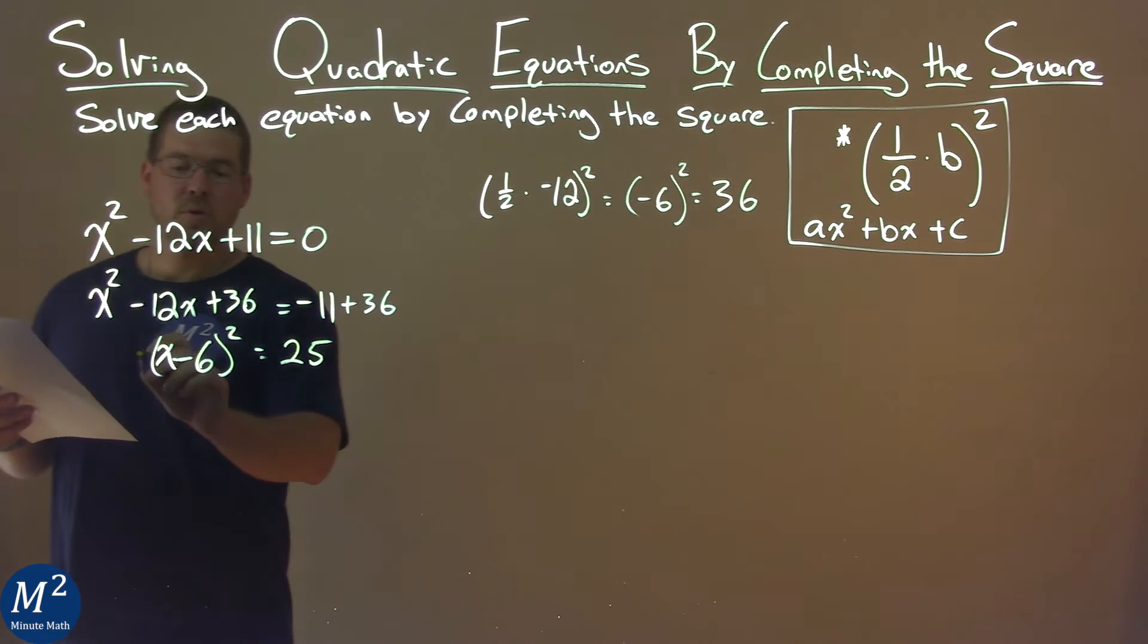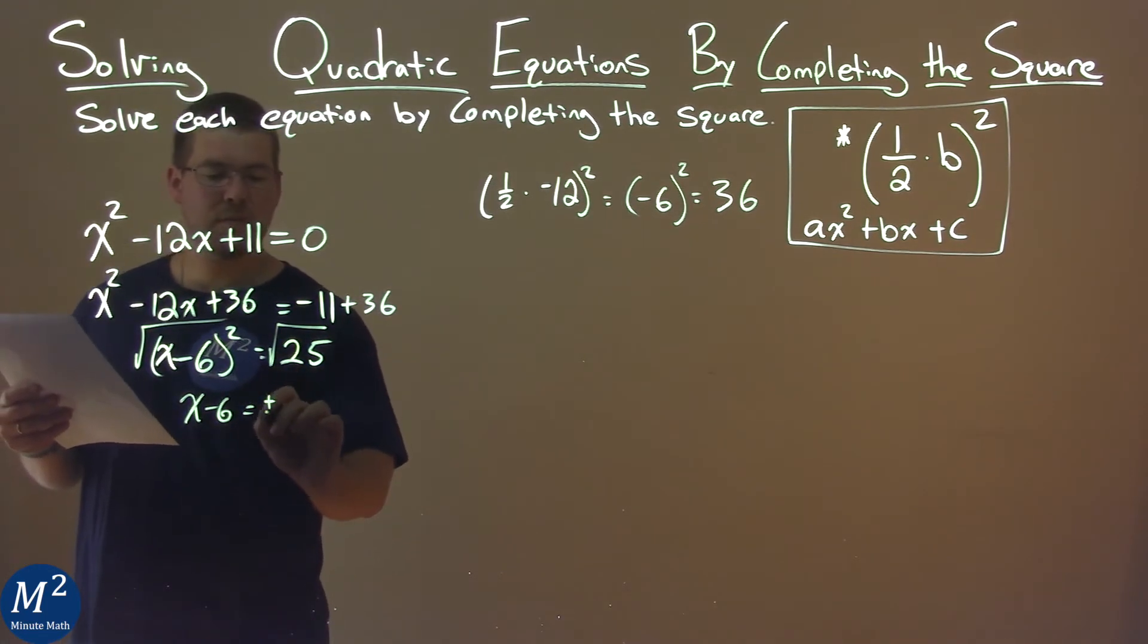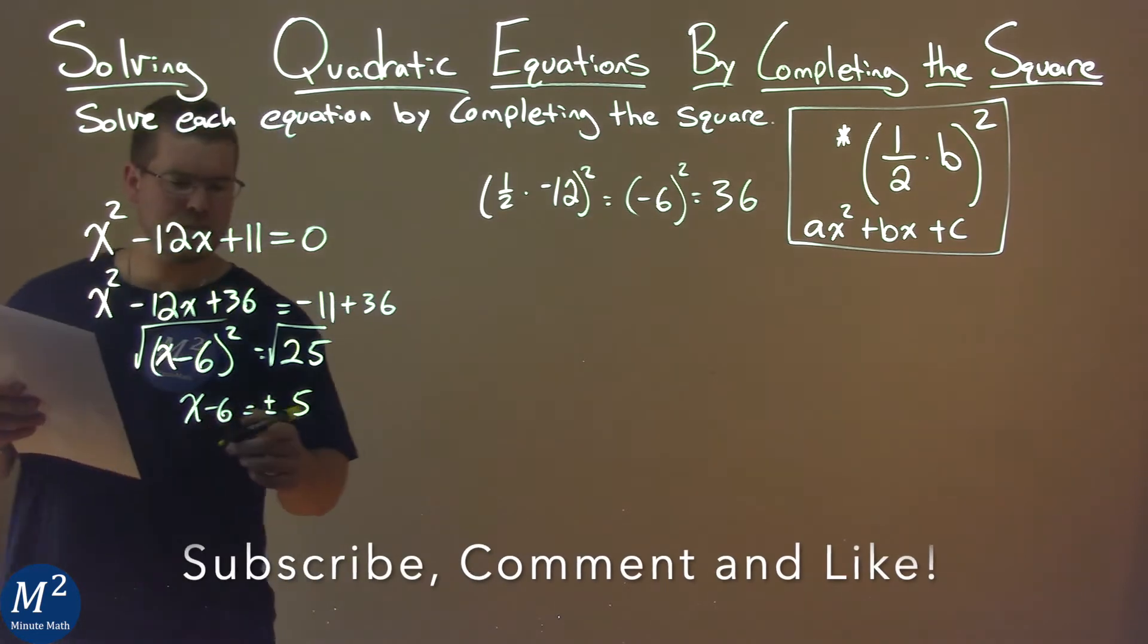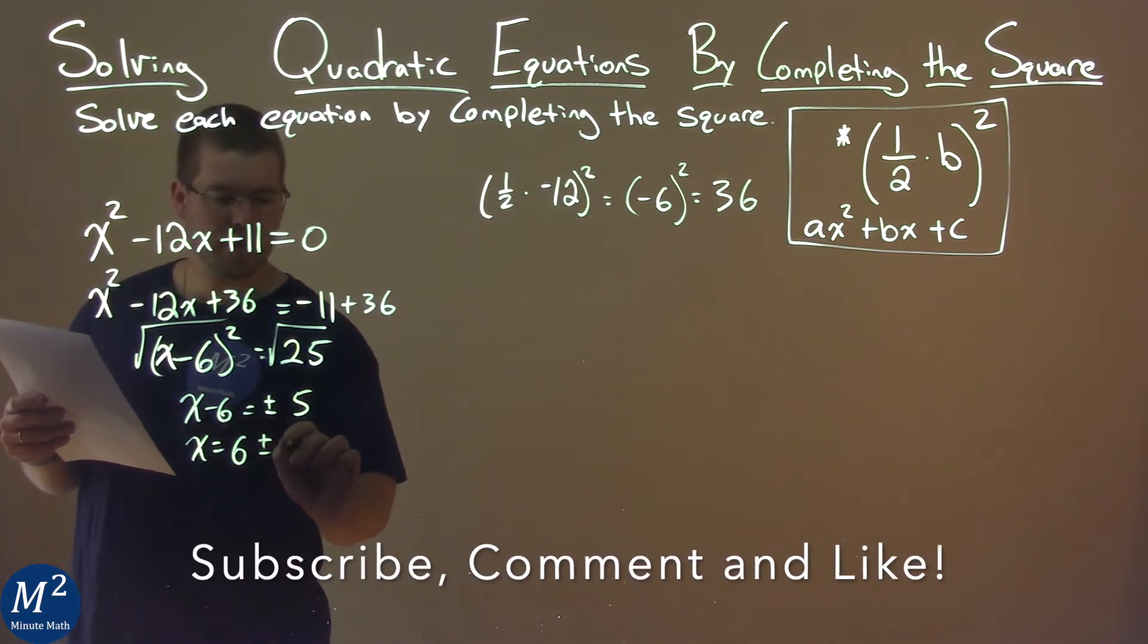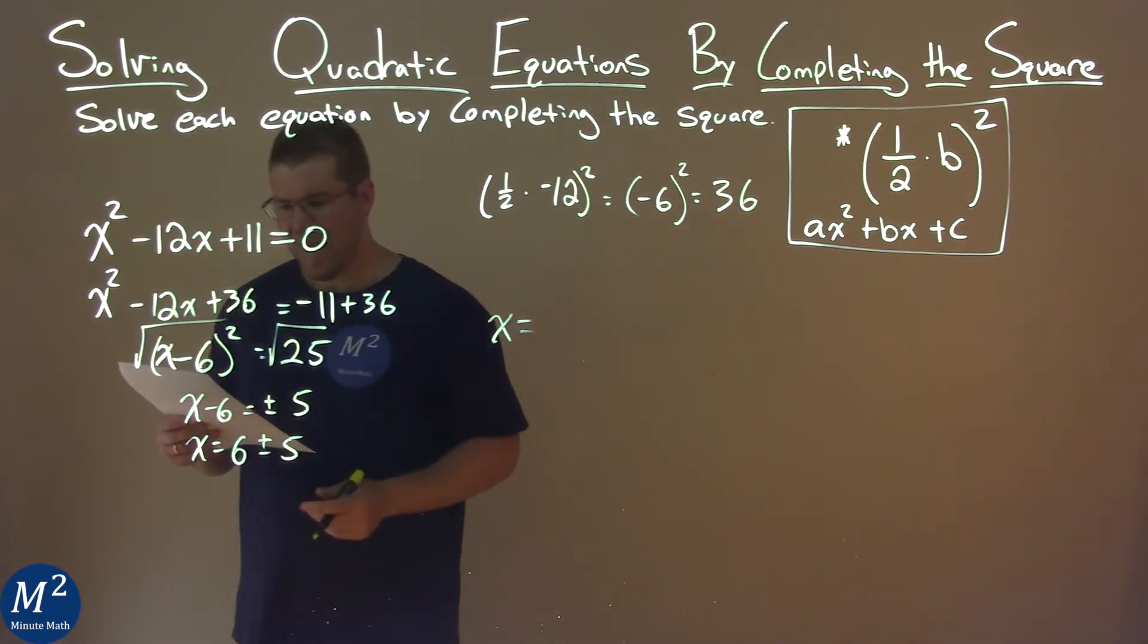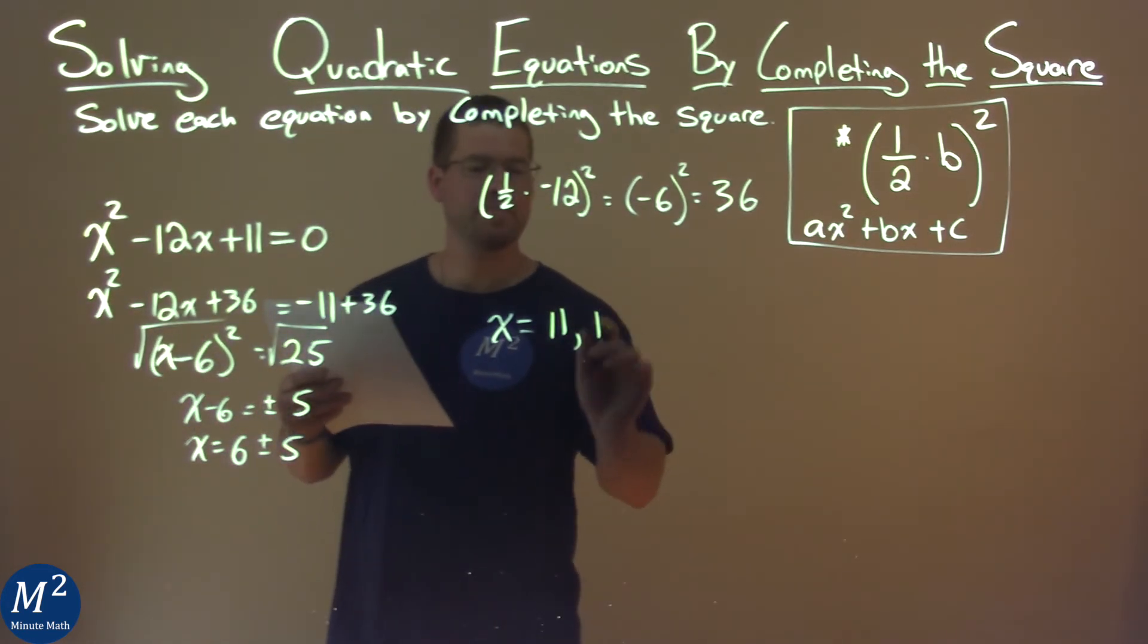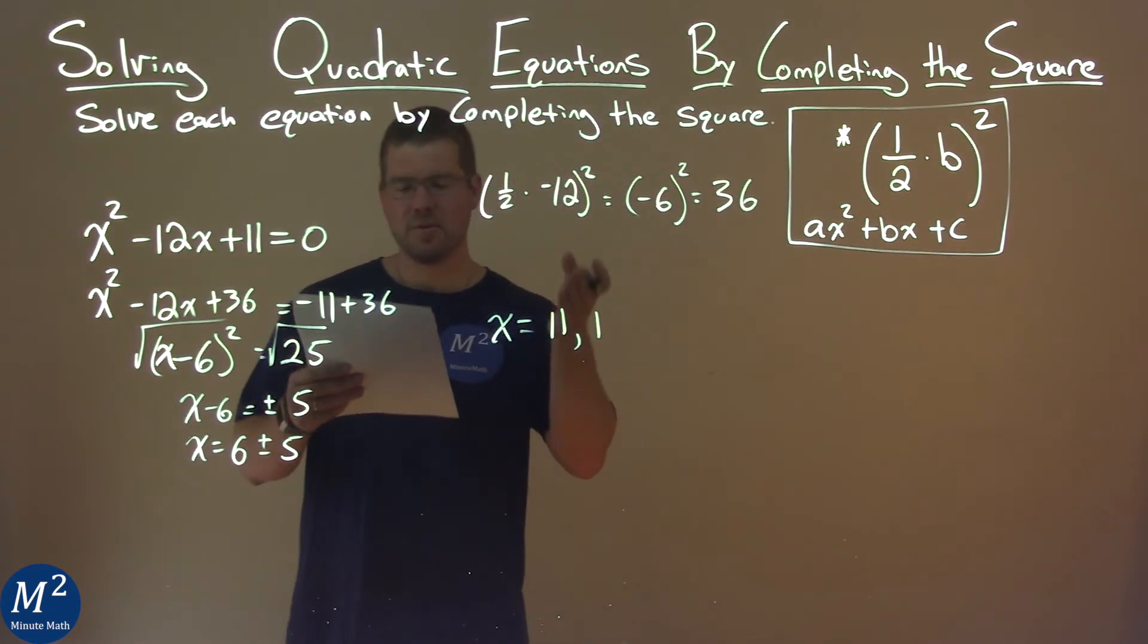We now need to take the square root of both sides to solve. X minus 6 equals, don't forget the plus or minus, taking the square root over equal sign, and the square root of 25 is just 5. So we add 6 to both sides, and we have x equals positive 6 plus or minus 5. So what does that come out to be? Well, 6 plus 5 gives us 11, while 6 minus 5 gives us 1, and so our two solutions here are x equals 11 and 1.